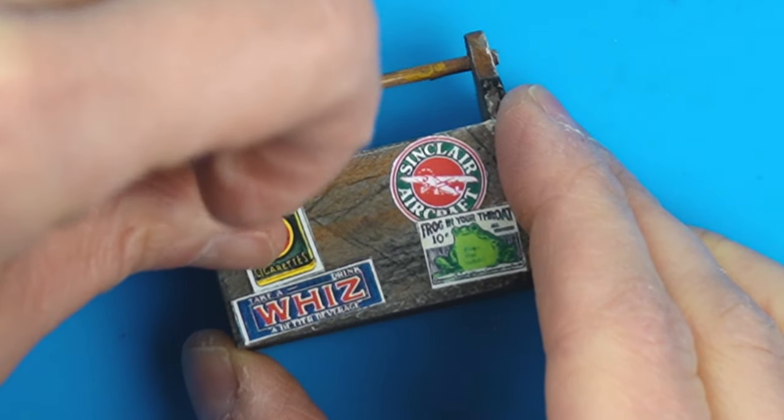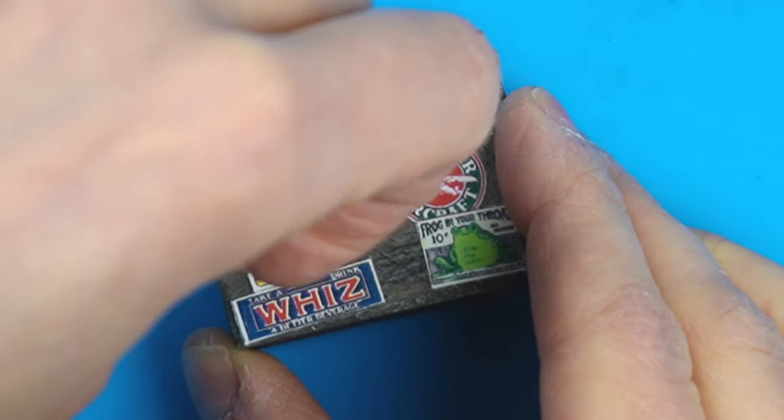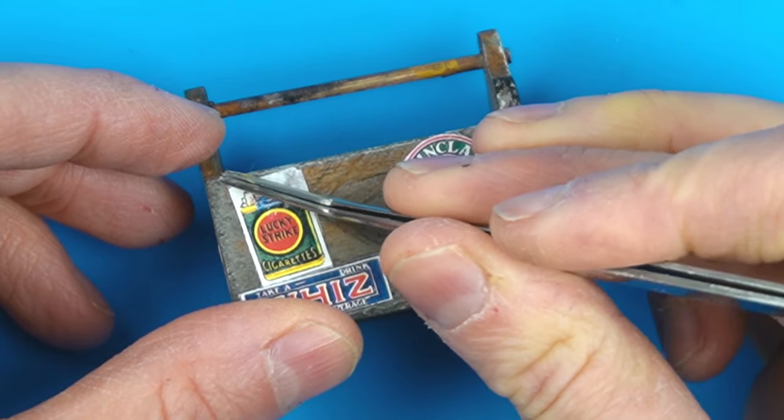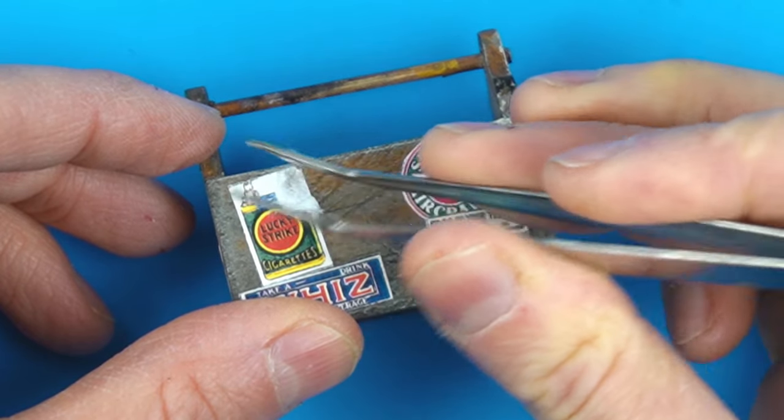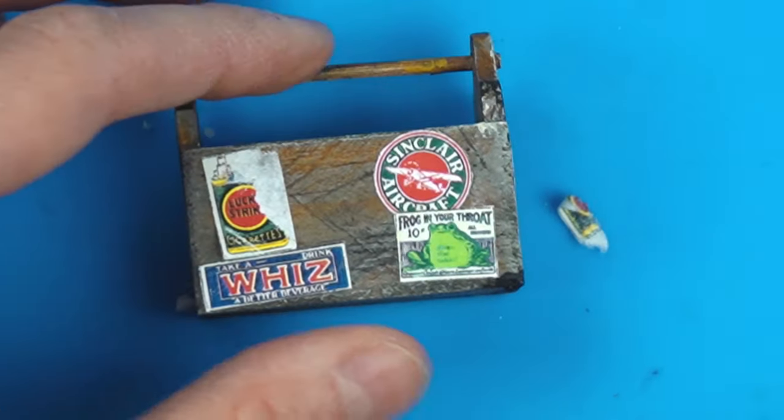The glue is dry and I want to make it look like someone tried to peel off this Lucky Strike advertising. I made sure to glue it down very well on all four corners and used my tweezers to pull it off.